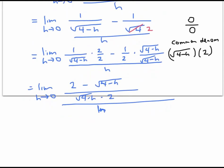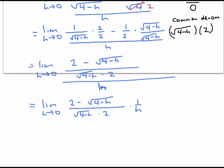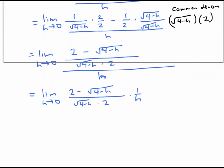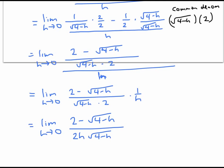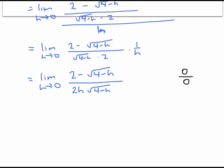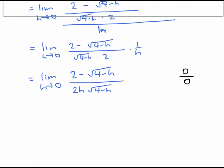Instead of dividing by h, let me multiply by one over h. Let's see if we can evaluate by plugging in h equals zero at this stage. Unfortunately, I'm still getting the zero over zero indeterminate form. But I'm not out of tricks — I haven't used the conjugate trick yet.